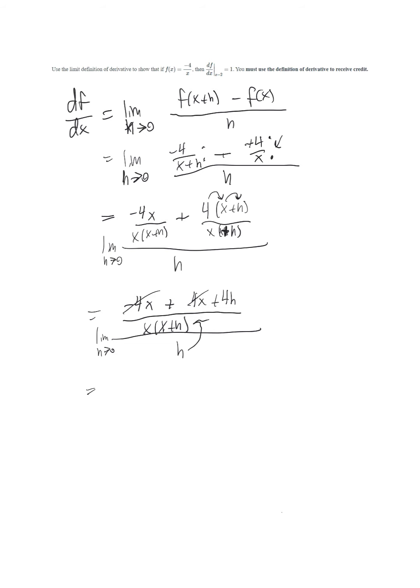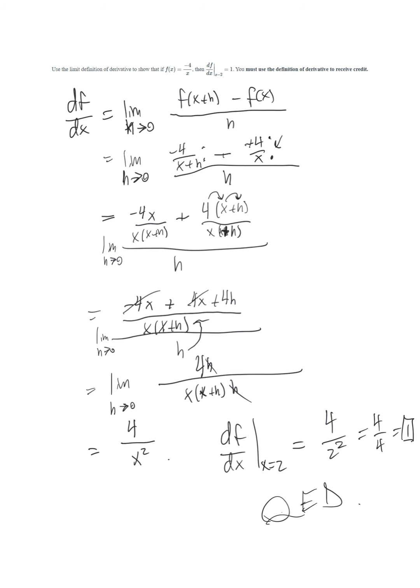And we're left with, also this H will just come here onto the denominator. The limit as H approaches 0 of 4H divided by X times X plus H times H. Now, conveniently, we get rid of this H on the bottom by canceling it out of the top. And we're now able to plug in a 0 for H. And we see that this limit turns into 4 over X squared. Now, that means if dF/dx is 4 over X squared, whenever you evaluate at X equals 2, you're going to get 4 over 2 squared, which is 4 over 4, which is equal to 1. In my world, we say QED, which is a fancy Latin way of saying as was to be shown.